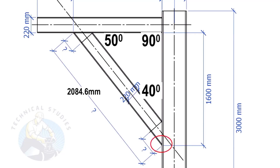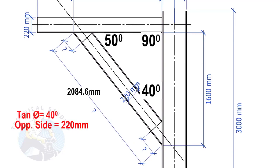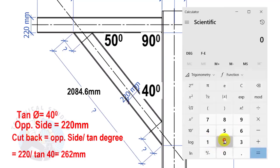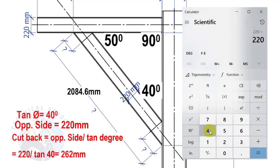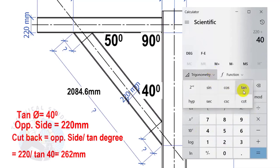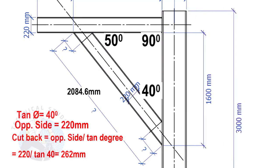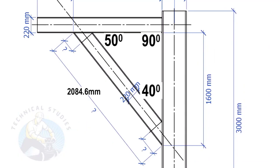The included angle is 40 degrees. Here we will apply the tan rule to find the cutback length. tan of 40 degrees, with the opposite side equal to 220 millimeters. Cutback equals opposite side divided by tan of the angle. The cutback length is 262 millimeters.